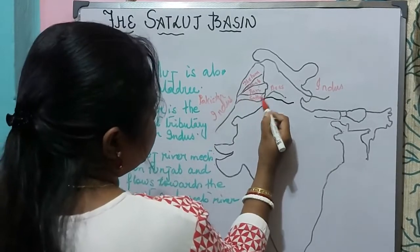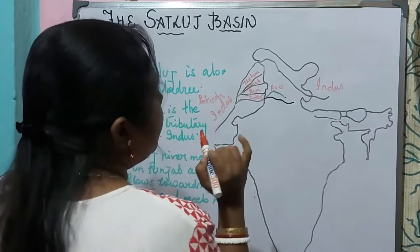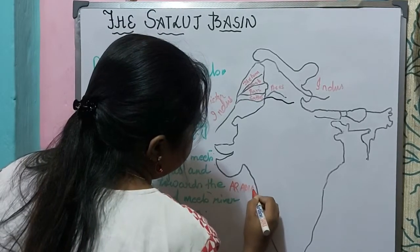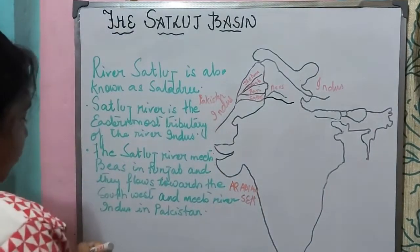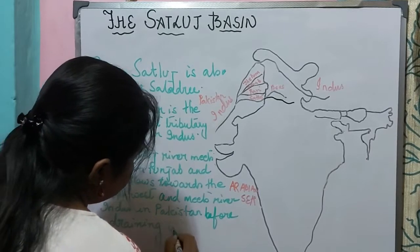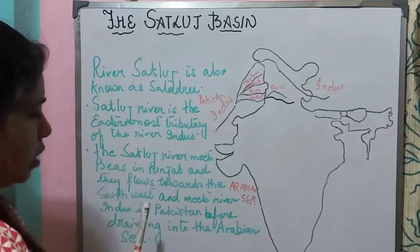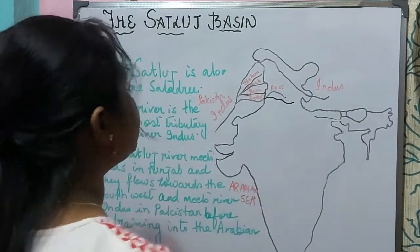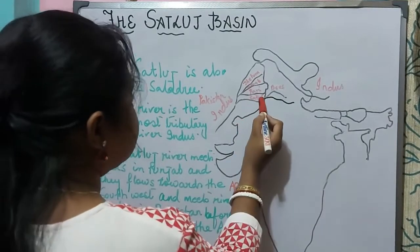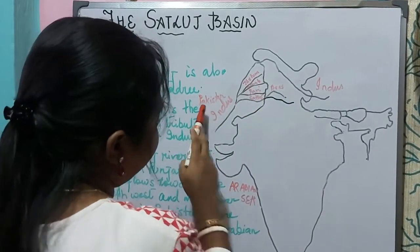So the Satluj meets the Beas in Punjab, and both of them together flow southwest, where they meet river Indus in Pakistan. This river Indus then drains out its water into the Arabian Sea. I hope you all understand that the Satluj river, which is the longest of the five rivers and also the easternmost tributary of river Indus, meets Beas in Punjab, flows southwest, meets Indus in Pakistan, and drains into the Arabian Sea.